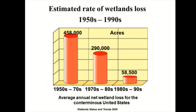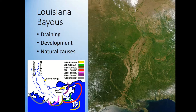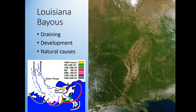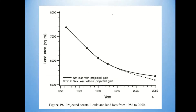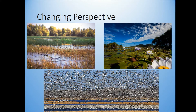Louisiana is a great example where a lot of shoreline wetlands are being drained, developed, or lost to natural causes. A hurricane comes through, floods over shoreline areas like swamps and bayous, and those areas get reclaimed by the ocean. There's a lot of land being lost each year in Louisiana to wetland loss.